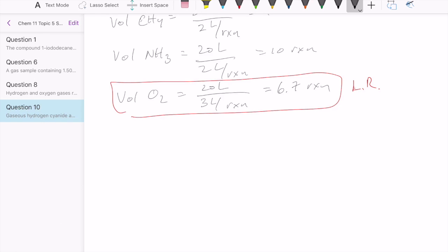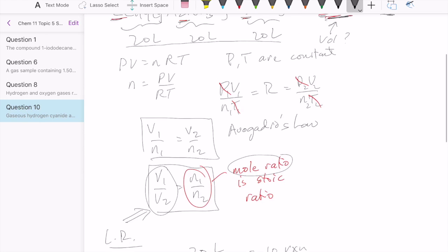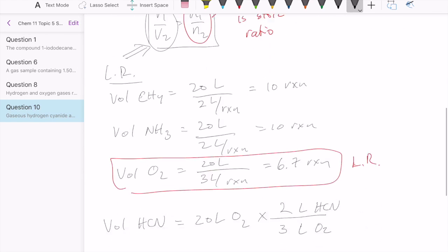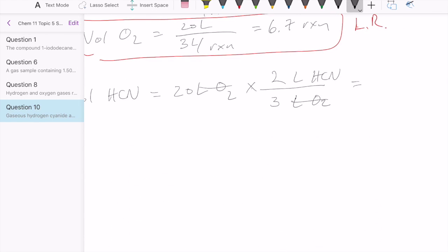Once we know our limiting reactant, we can use that to calculate the product that we're looking for, HCN. And to do that, we'll just say the following: 20 liters of oxygen multiplied by, instead of the mole to mole ratio, now it's going to be the volume to volume ratio of oxygen to HCN. And oxygen is 3, HCN is 2 in our original balanced equation. So that tells us now that our end product is going to be 13.3 liters of HCN.